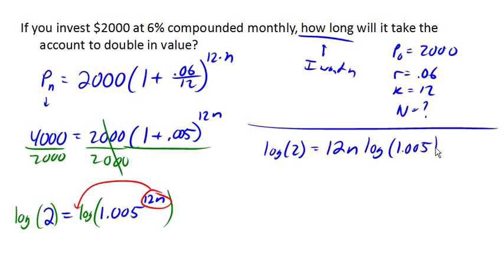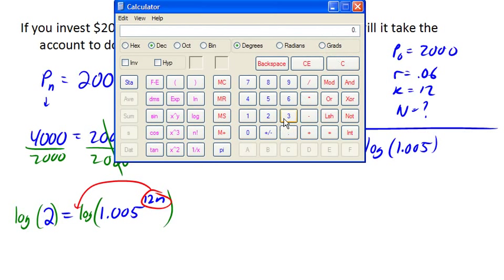Now at this point, there's a couple routes we can go. I think I'm just going to go, let's pull out our calculator route. So I'm going to start on the left with log of 2 is 0.301.